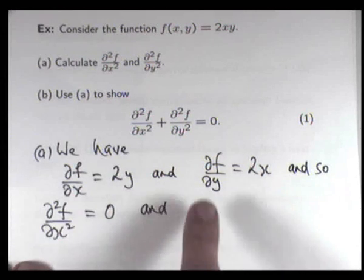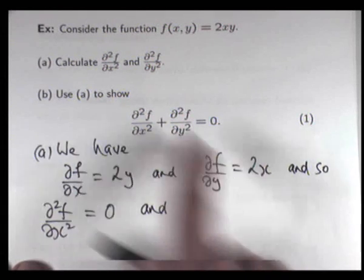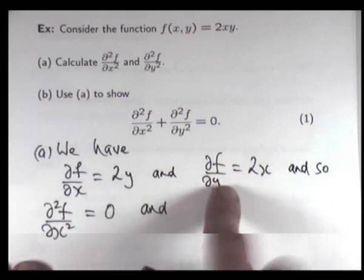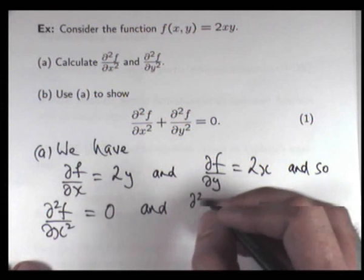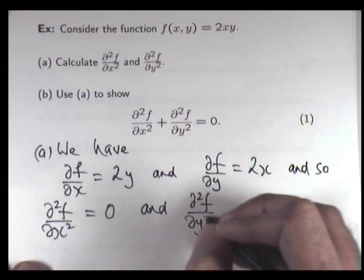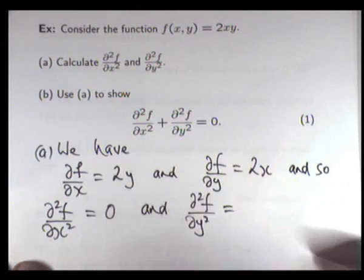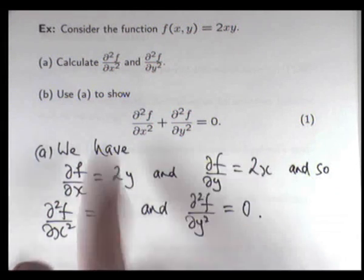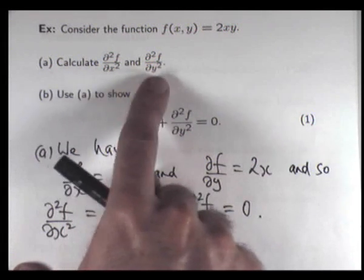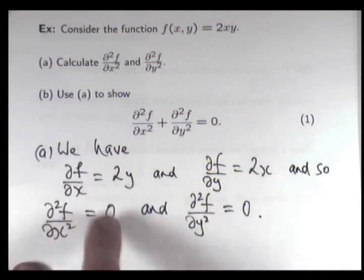And similarly, if I go up to here and calculate ∂²f/∂y², then here x is constant. So this is just going to go to 0. So the value of these two second-order partials are both 0.